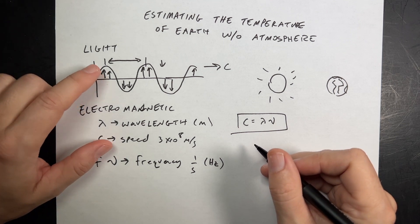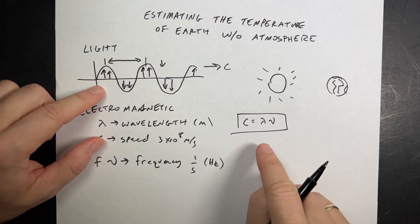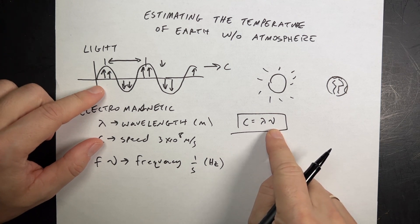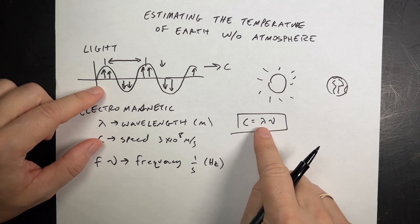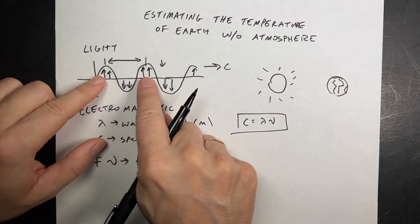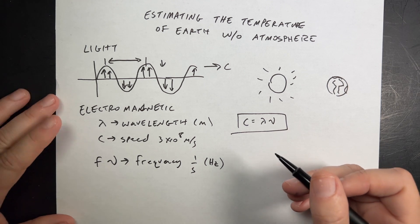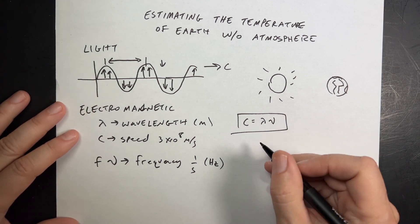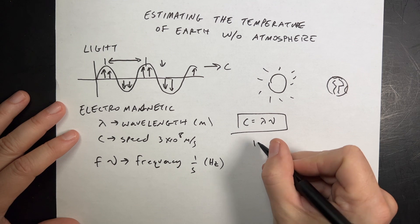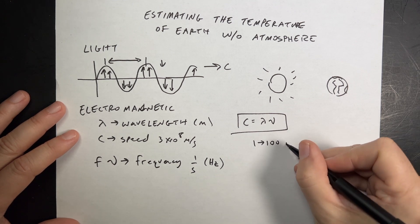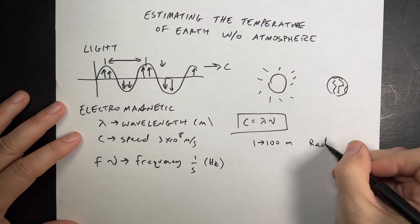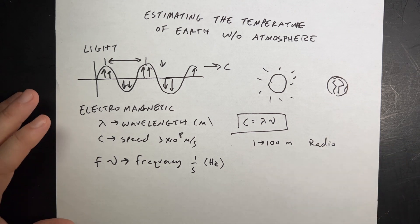Different wavelengths of electromagnetic waves interact differently with matter — so the wavelength tells you how the wave interacts with matter. If I change the wavelength, I have to change the frequency too. We call waves by different names based on their wavelength. If the wavelength is roughly one to a hundred meters or even bigger, we call that a radio wave, and there's a large range for that.